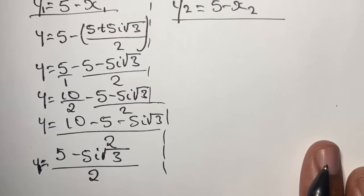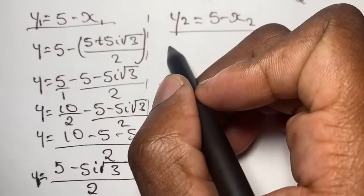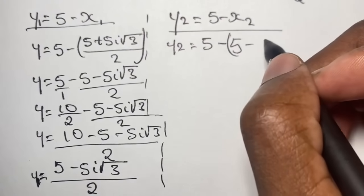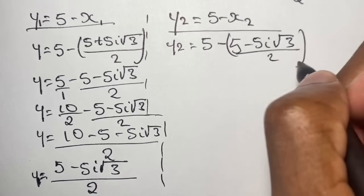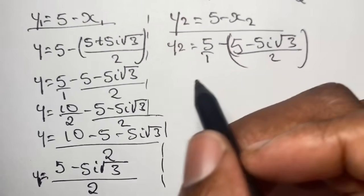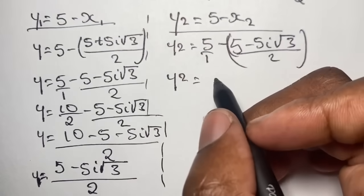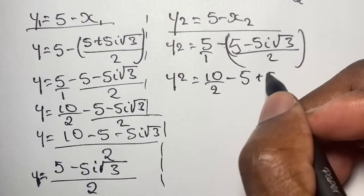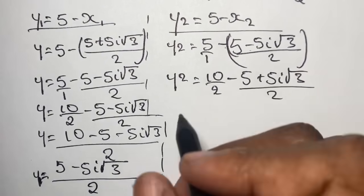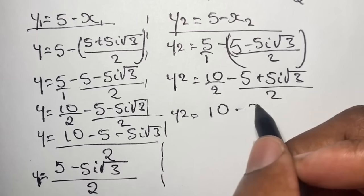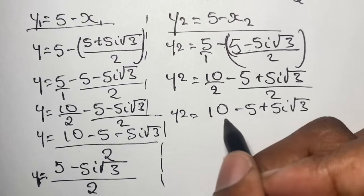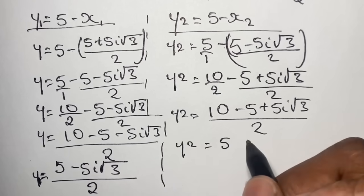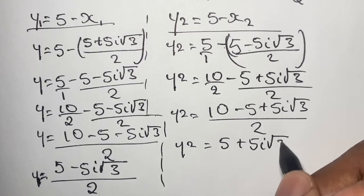For the second solution of y, y₂ equals 5 minus x₂, which is 5 minus the quantity 5 minus 5i times the square root of 3 over 2. Writing 5 as 10 over 2, we have 10 over 2 minus the quantity 5 minus 5i times the square root of 3 over 2. This gives us 10 minus 5 plus 5i times the square root of 3, all over 2, so y₂ equals 5 plus 5i times the square root of 3, all over 2.